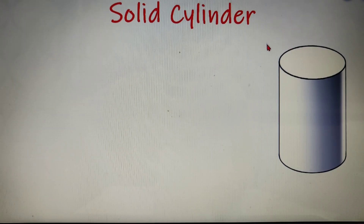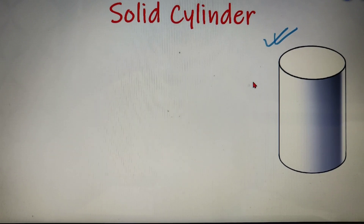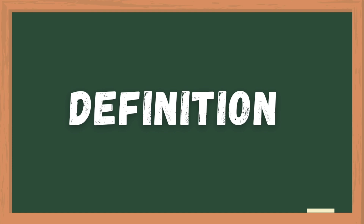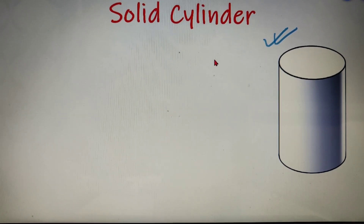The shape that you can see over here is a solid cylinder. A cylinder is of two types — solid and hollow — but in this video we will discuss only about a solid cylinder. A solid obtained by revolving a rectangular lamina about one of its sides is called a right circular cylinder or a solid cylinder. Basically, it means that a solid whose cross-sections are congruent circles is called a right circular cylinder.